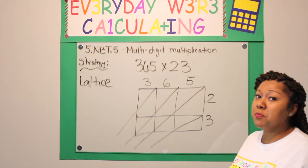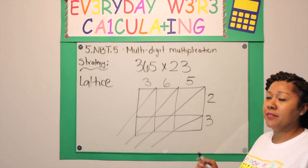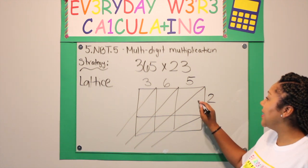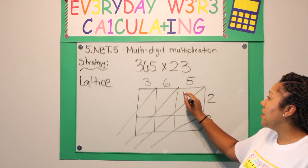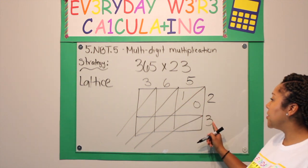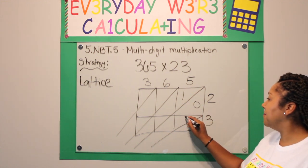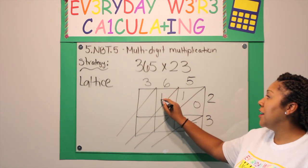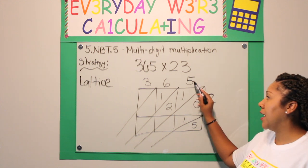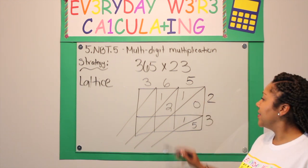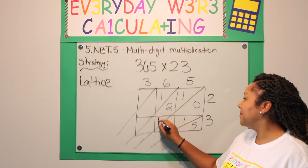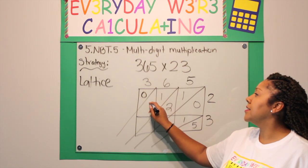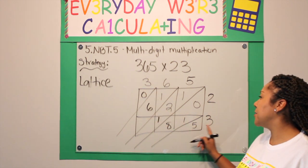All you are going to do is multiply the digits starting in essentially the ones place. 5 times 2 is 10, so there is my 0 and my 1. 5 times 3 is 15. 6 times 2 is 12. We are doing the same thing as the area model — multiplying the row by the column. 6 times 3 is 18. 3 times 2 is 6, so it is 0 and 6. And 3 times 3 is 9.